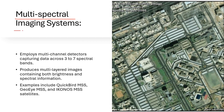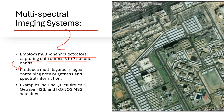We also have multispectral imaging systems, which employ multi-channel detectors that capture data across three to seven spectral bands. They produce multi-layered images containing both brightness and spectral information, resulting in colorful images. Examples of satellites providing multispectral images include QuickBird, MSS, IKONOS, and many others.